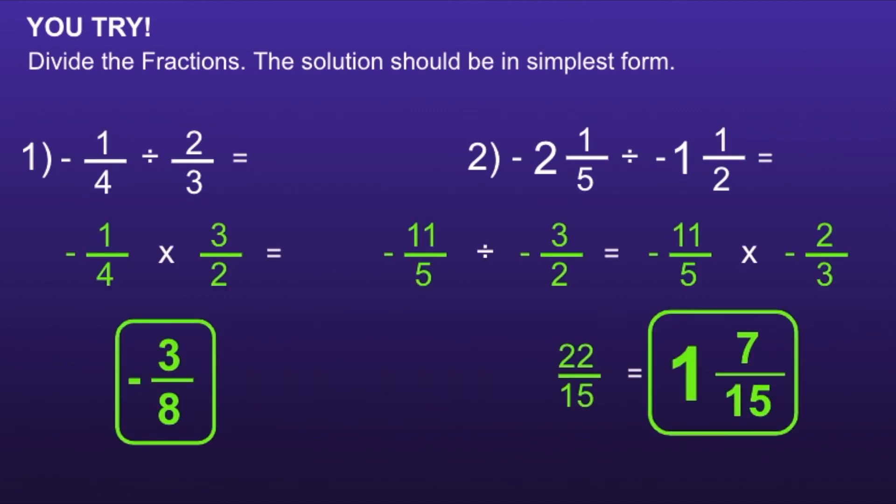Okay, let's take a look. The answer to number one is negative three-eighths, and the answer to number two is one and seven-fifteenths.